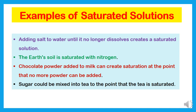Number one: adding salt to water until it no longer dissolves creates a saturated solution. You add salt in one glass of water — dissolve it in two tablespoons first. If you add salt in 10 to 15 tablespoons, you will reach a point where it will not dissolve anymore in one glass of water. This will be a saturated solution.